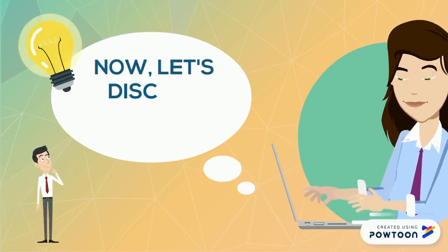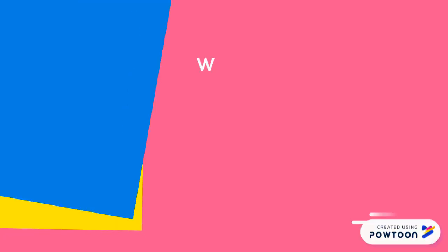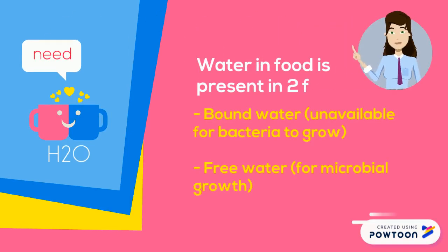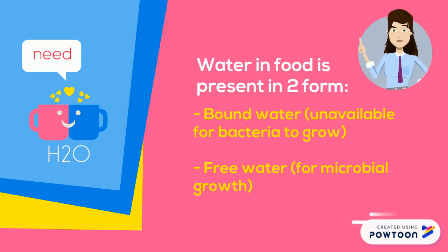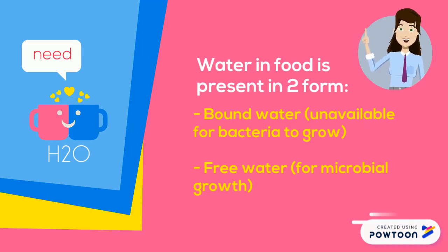Now let's discuss moisture. Water or moisture in food is present in two forms. The first is bound water, which is unavailable for bacteria to grow. The second is free water, which is available for microorganisms to grow.